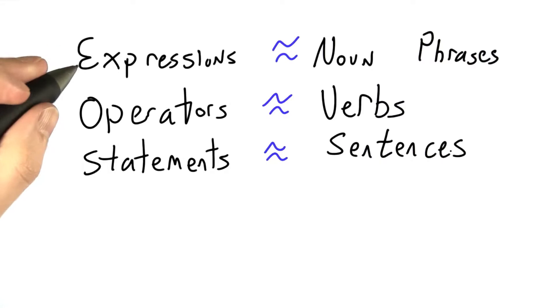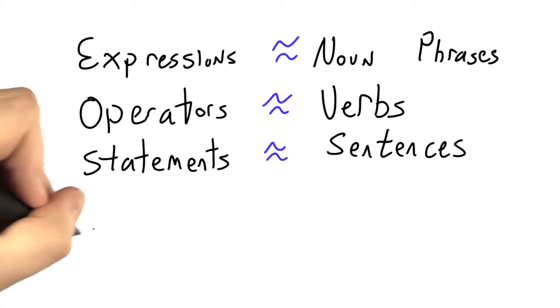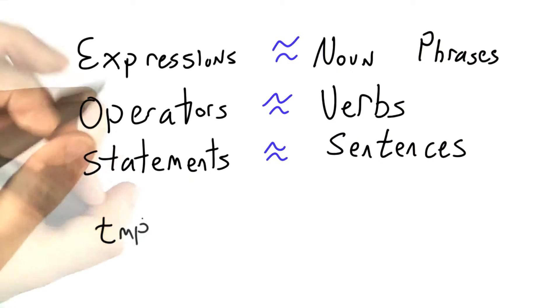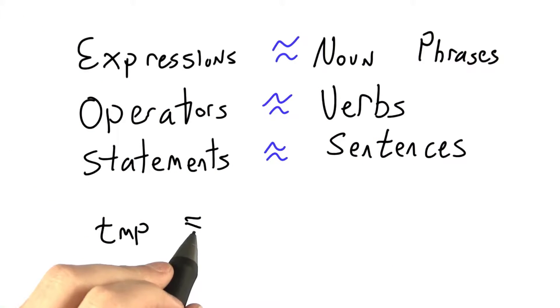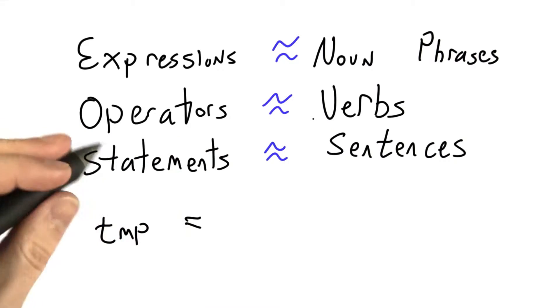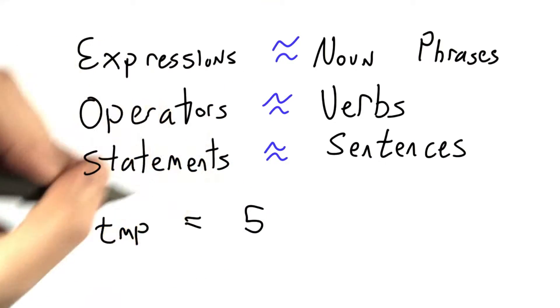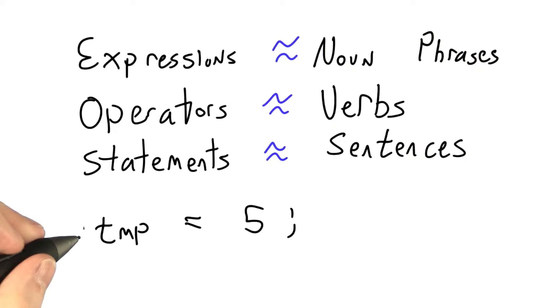So if we make an analogy with natural languages, if expressions like temp are noun phrases, then operators like assignment are verbs, and entire statements like temp gets 5 are sentences.